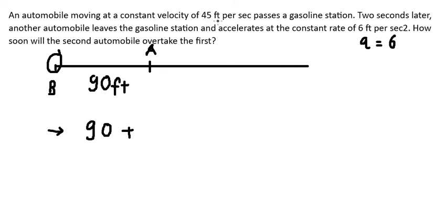So car A, we have 45 multiplied by t because if car B is moving, car A is still going. That's why we need to multiply by t in here. This equals to, we apply the formula in here.